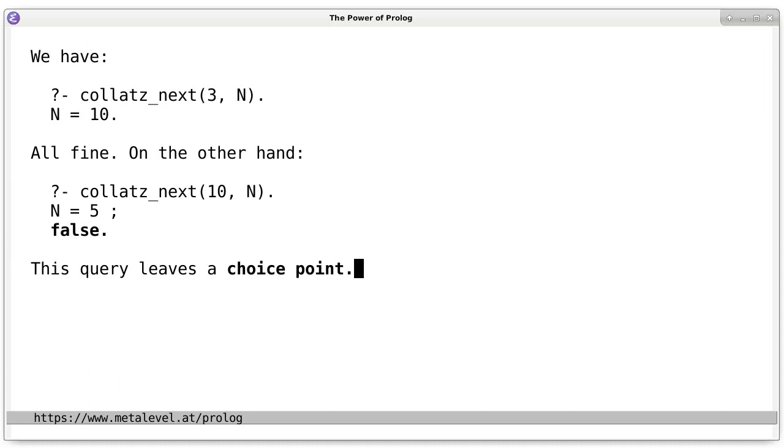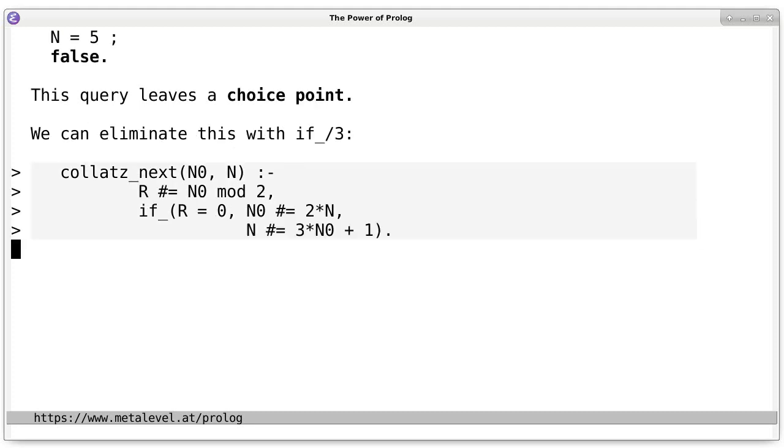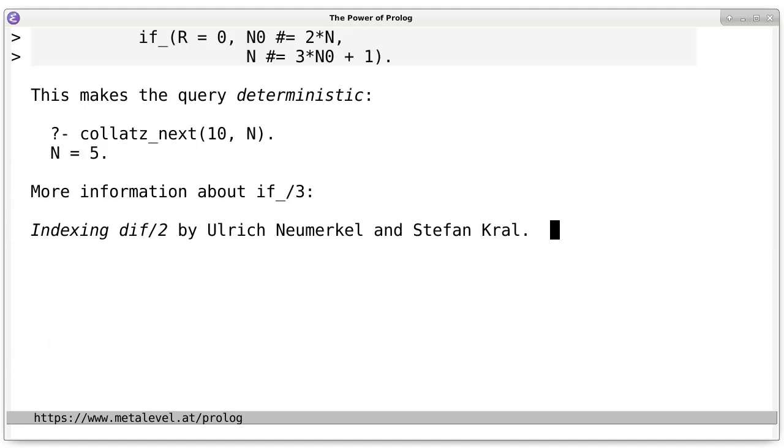And you can eliminate this choice point with a predicate called if_/3. And I show you here just a slight variation, a slightly different implementation of collatz_next. Here I'm using if_/3 to retain the predicate's generality and at the same time avoid this choice point. So, this is one way you can write collatz_next to avoid this issue. And the query above is now deterministic. So, if we ask now, collatz_next 10 and n, we get n is 5. And it's clear now that there are no further solutions. And for more information about if_/3, check out the publication Indexing dif by Ulrich Neumerkel and Stefan Kral.